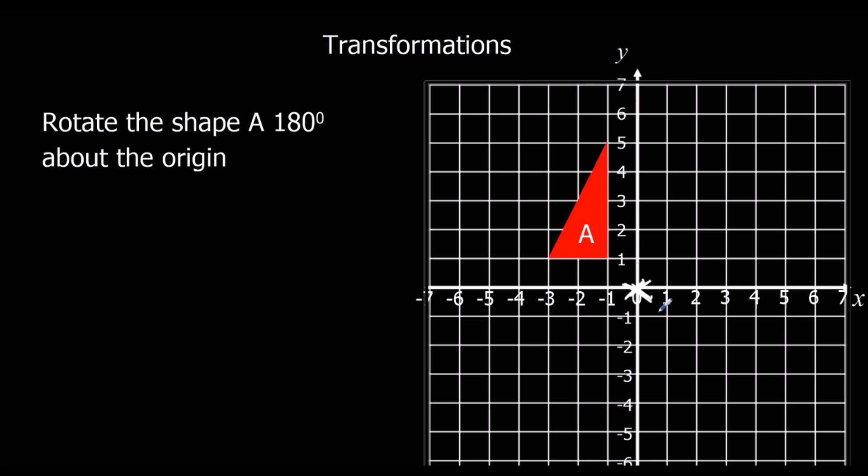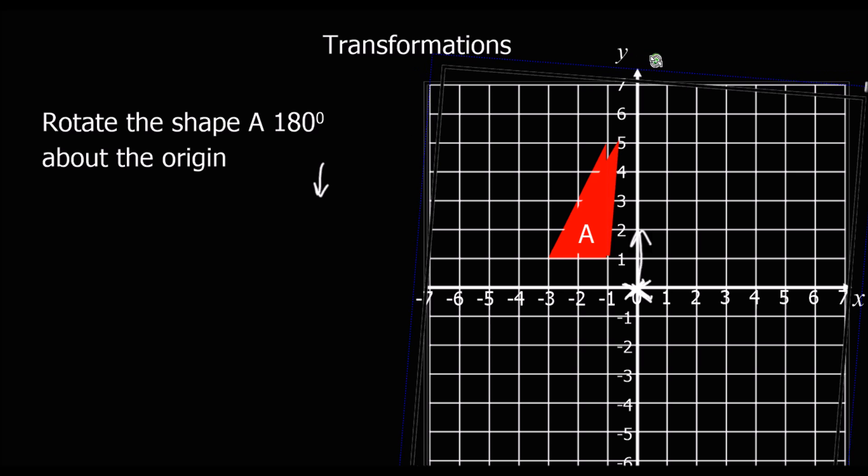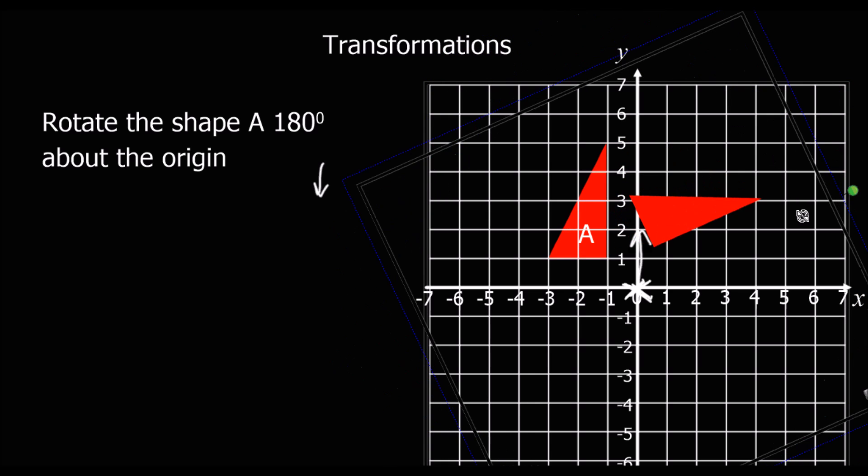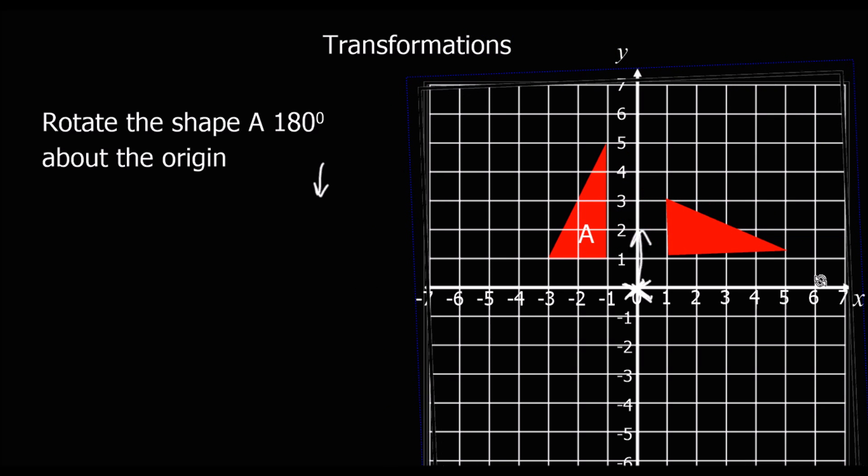And 180 degrees, if we're facing that way now, we want to spin it around until we face that way. So again we're going to grab the shape and spin it around. So that's 90 degrees, that's 180 degrees.